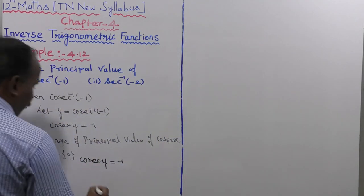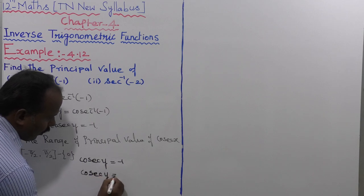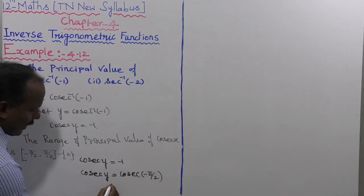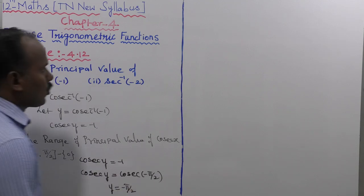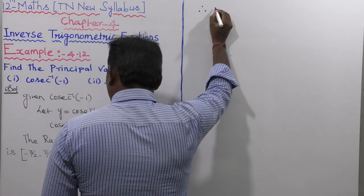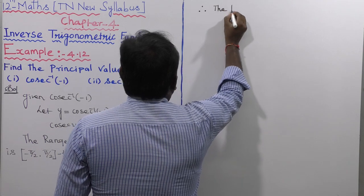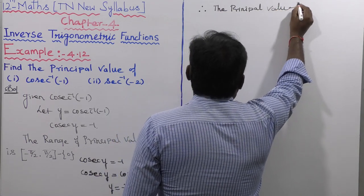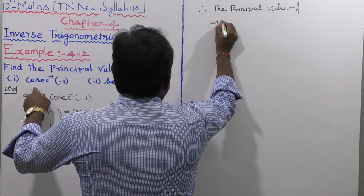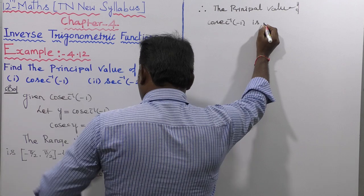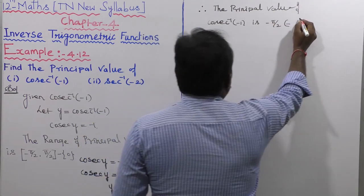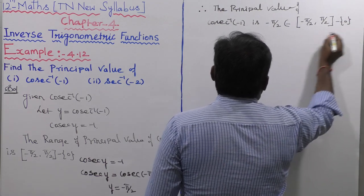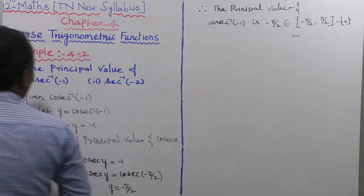So, cosecant y is equal to cosecant of minus pi by 2. Cancelling cosecant on both sides, y is equal to minus pi by 2. Therefore, the principal value of cosecant inverse of minus 1 is minus pi by 2, which belongs to the closed interval minus pi by 2 to plus pi by 2, except the value 0. That is the principal value of cosecant inverse of minus 1.